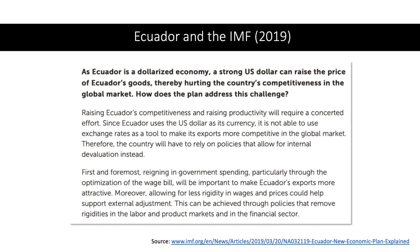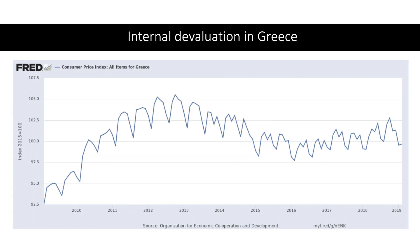Sometimes internal devaluation can happen from supply-side reforms. But one of the criticisms of internal devaluation is that it's a much slower way of improving competitiveness than external devaluation, and there are also big questions about whether it works. This chart shows the general price level in Greece — from 2013 onwards the economy was in depression where the general price level was falling. There was price deflation in Greece, part of their internal devaluation.